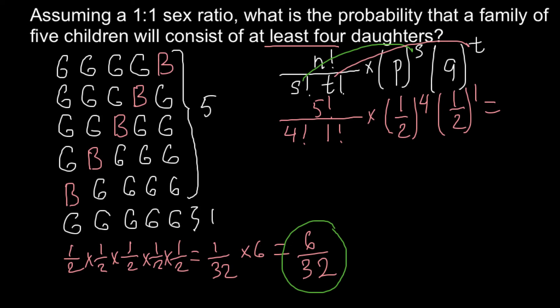So now we just have to calculate. What does 5 factorial mean? That means 5 multiplied by 4 by 3 by 2 and by 1. And divided by 4 factorial, which means 4 multiplied by 3 by 2 and by 1. And 1 factorial would be just 1. And of course this part of the formula — multiplied by one half raised to 4 — would stay the same.